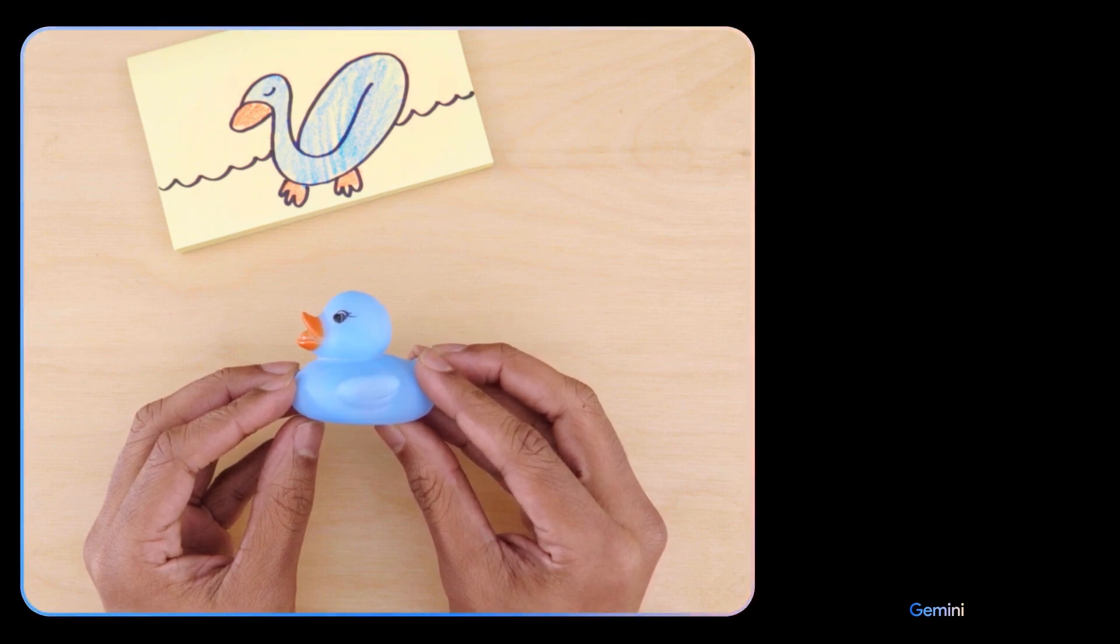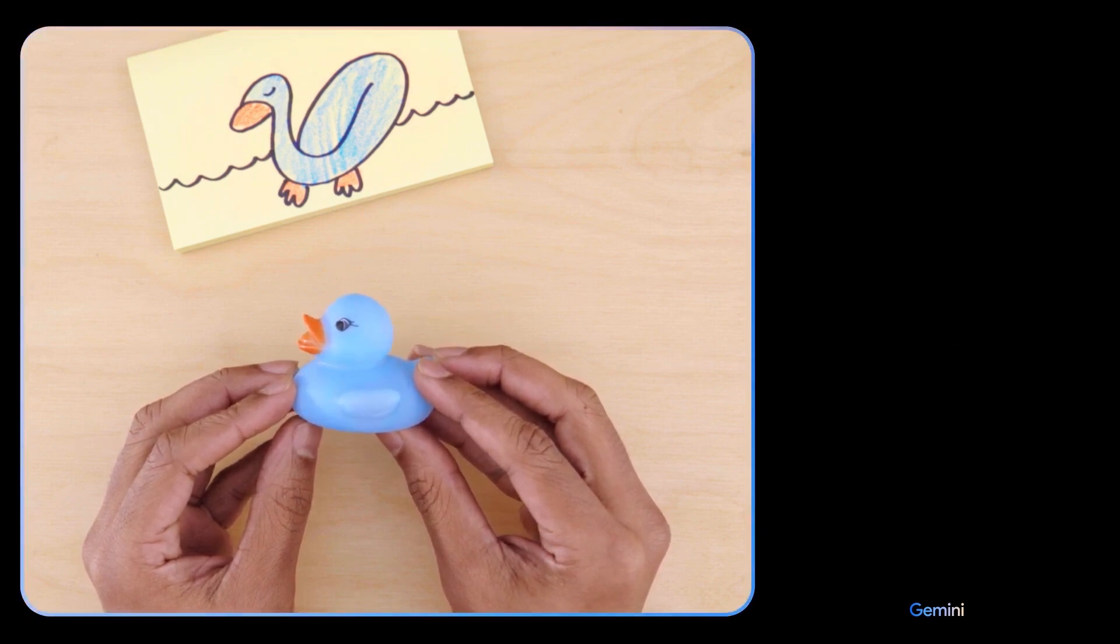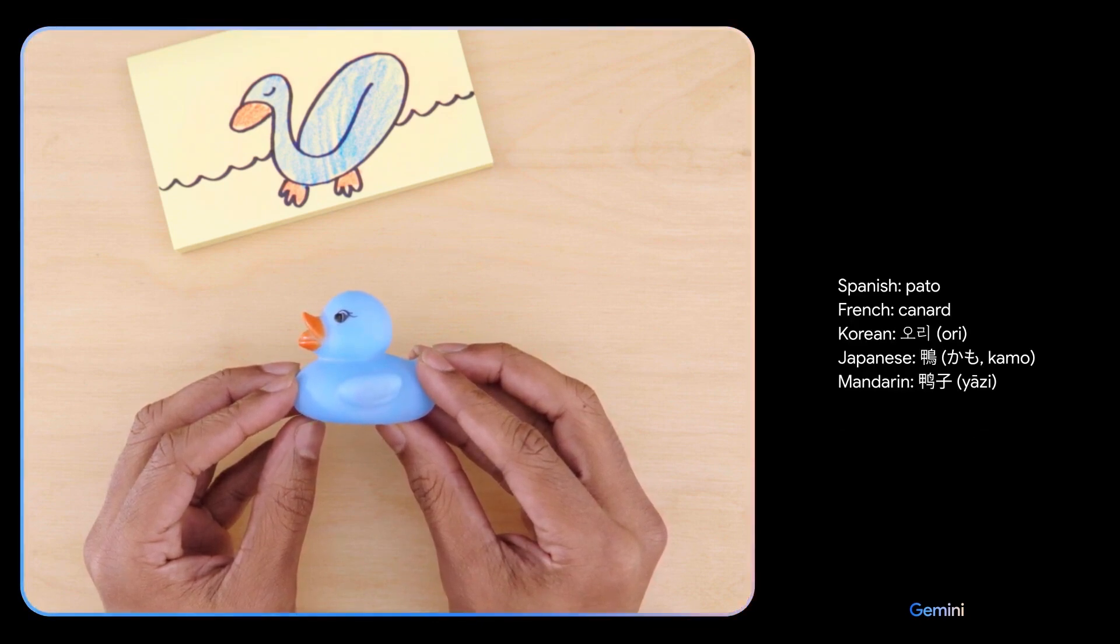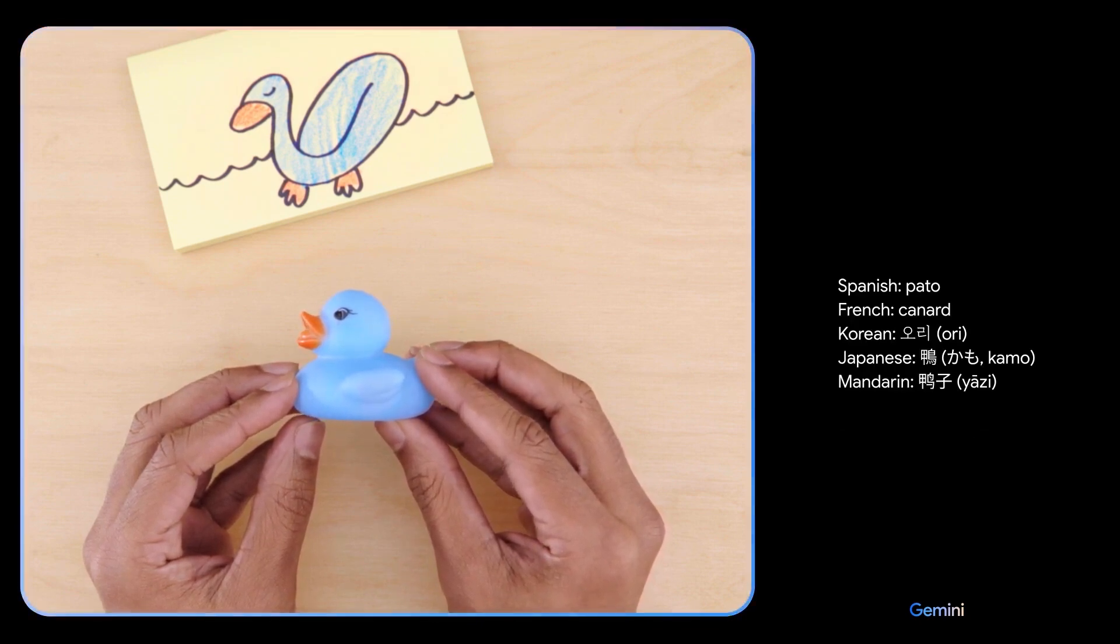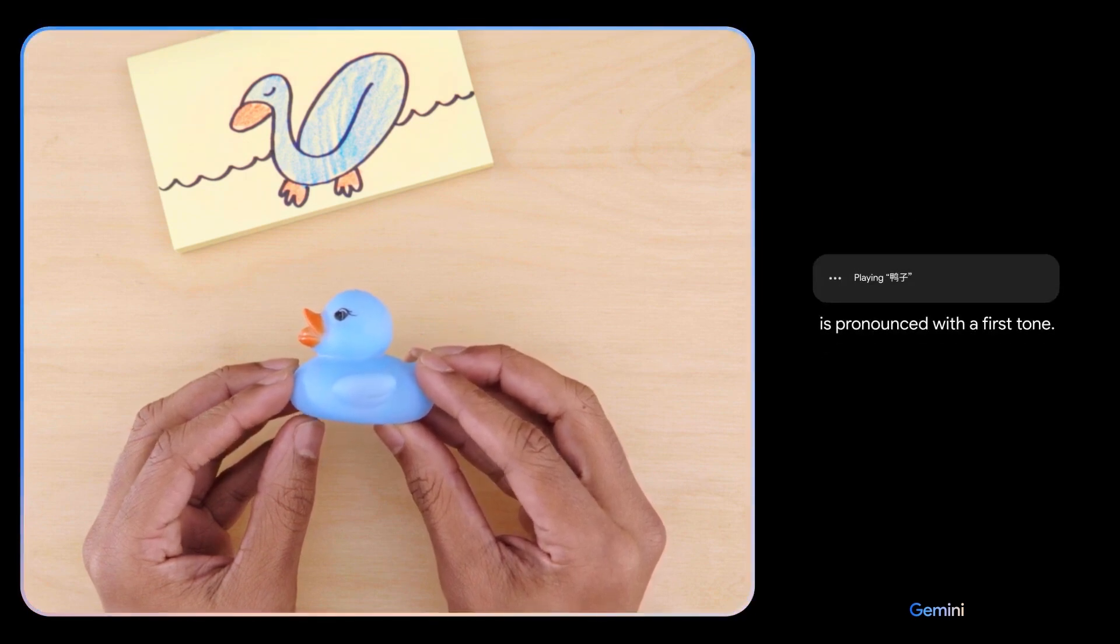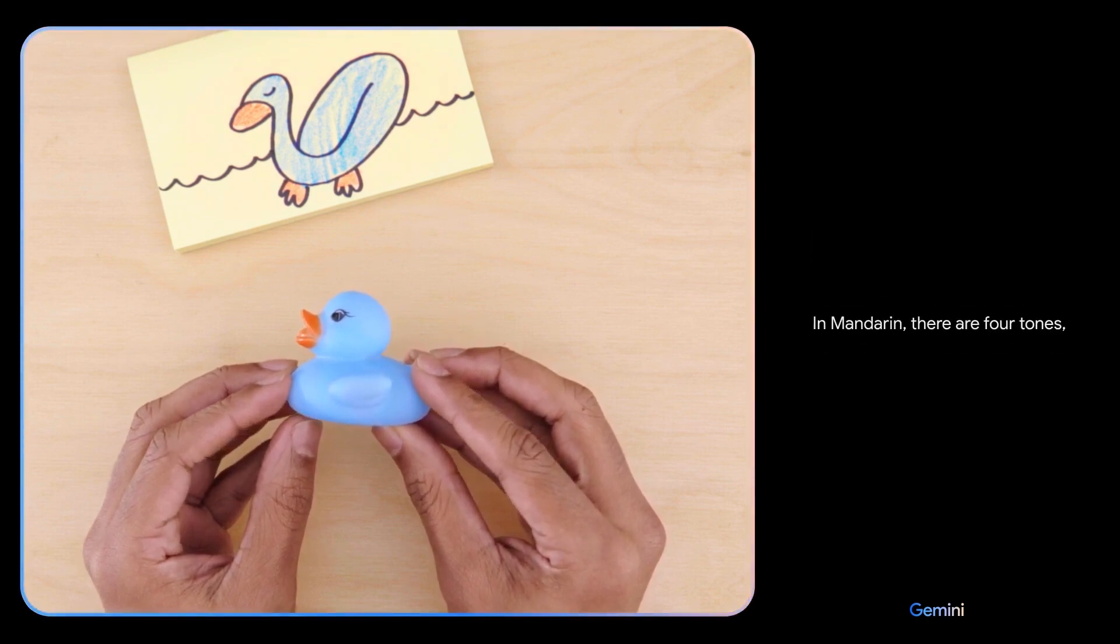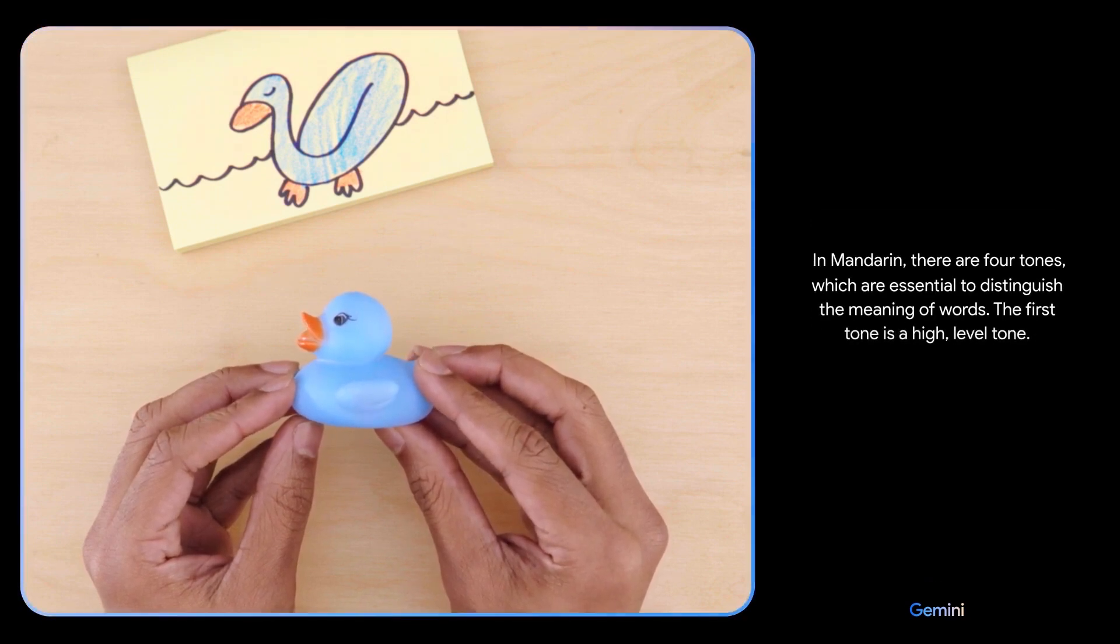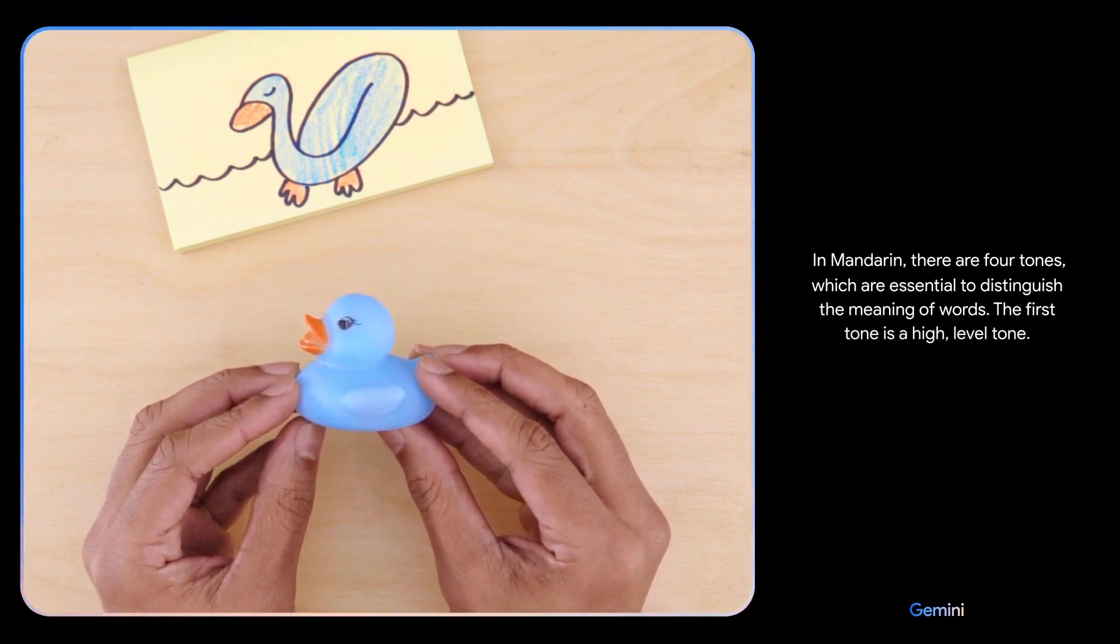Can you teach me how to say this in a different language and give me a few options? Can you explain how to pronounce the Mandarin one? Is it Yatsa? Yatsa is pronounced with a first tone. In Mandarin, there are four tones which are essential to distinguish the meaning of words. The first tone is a high level tone. Oh, okay.